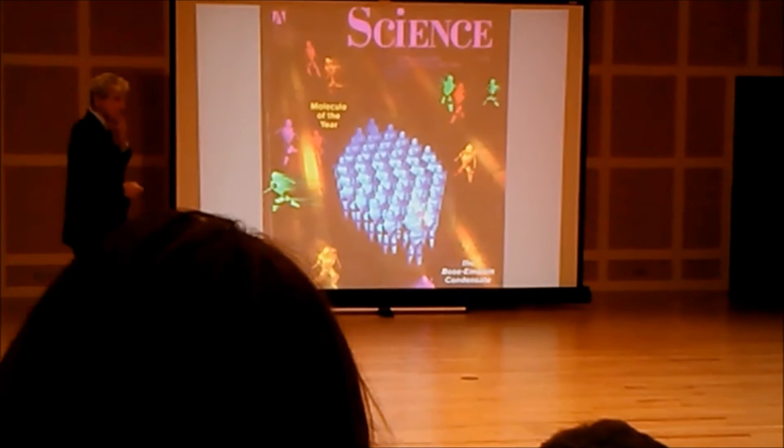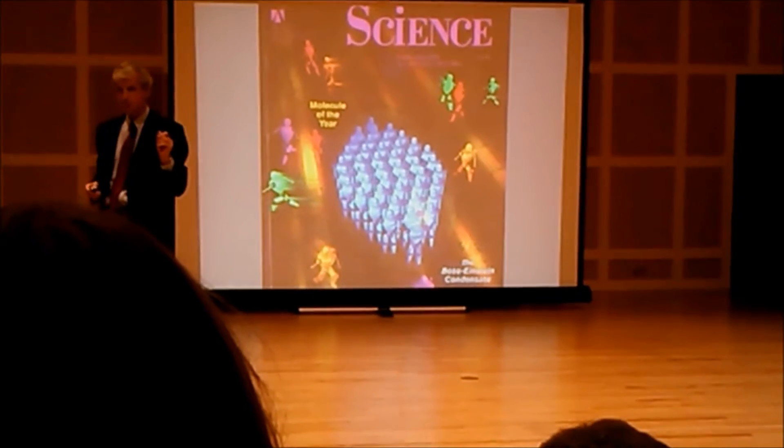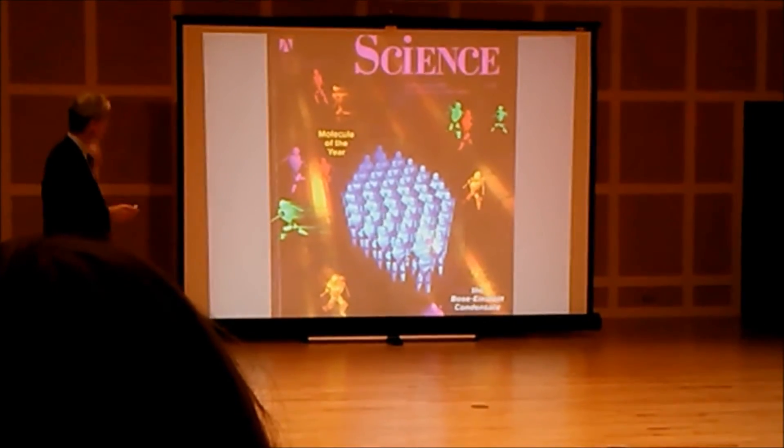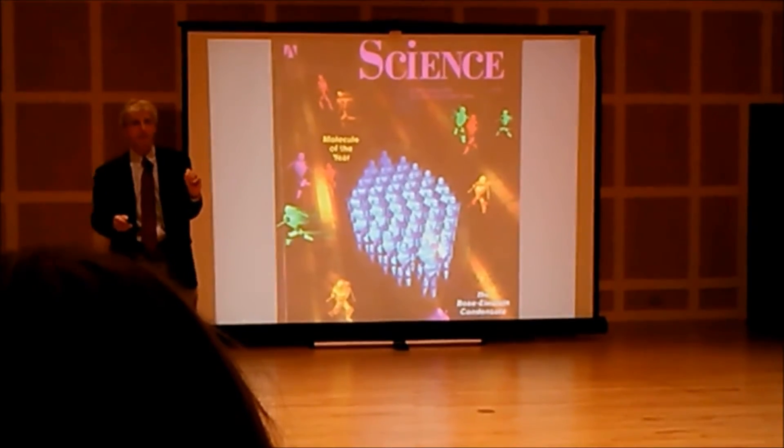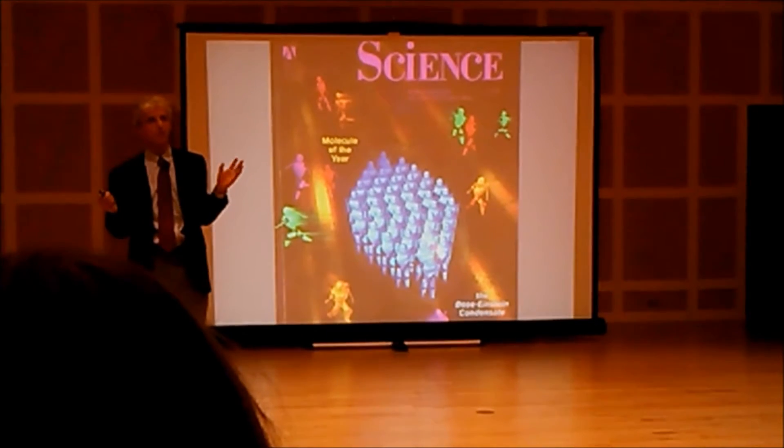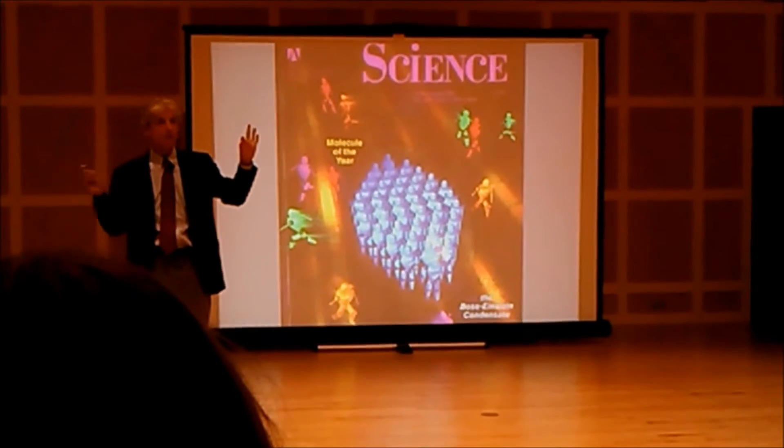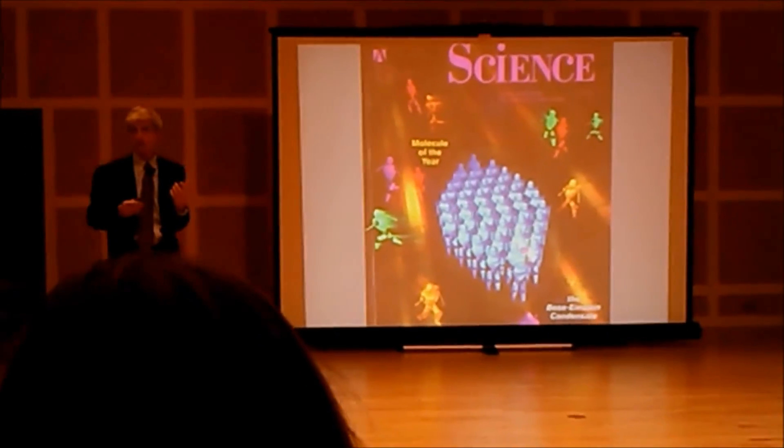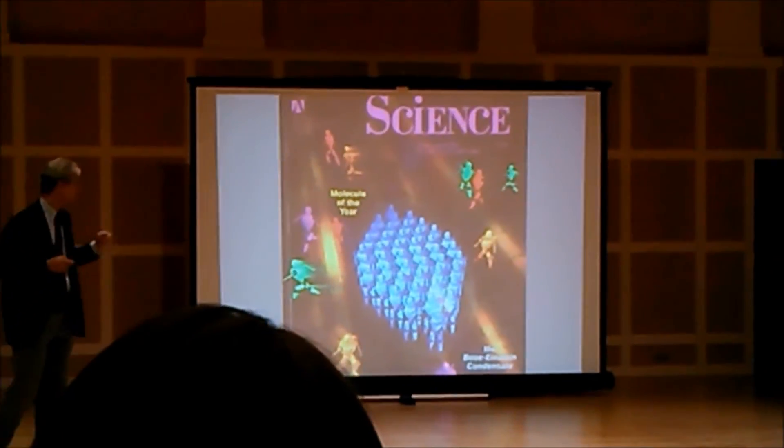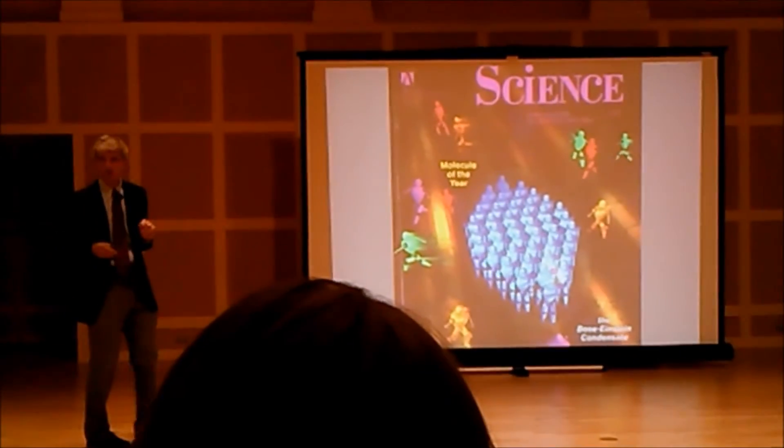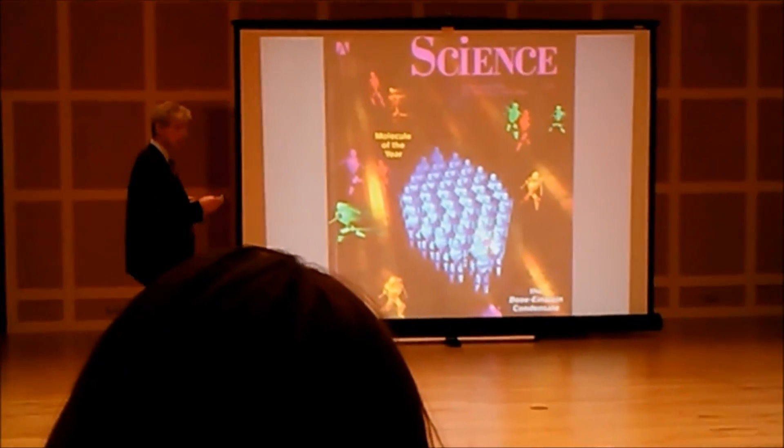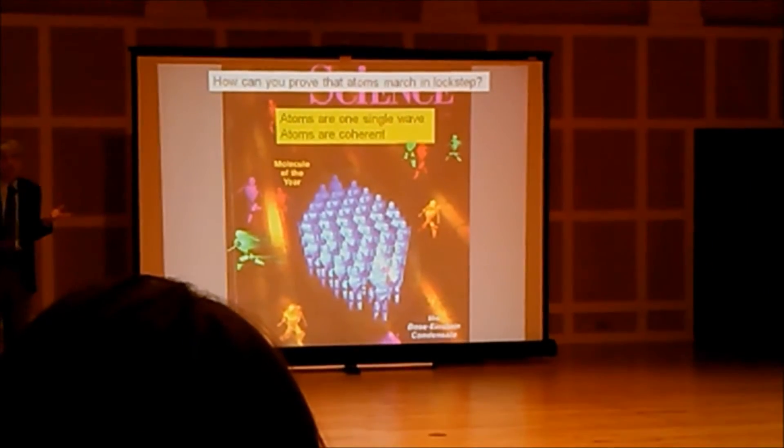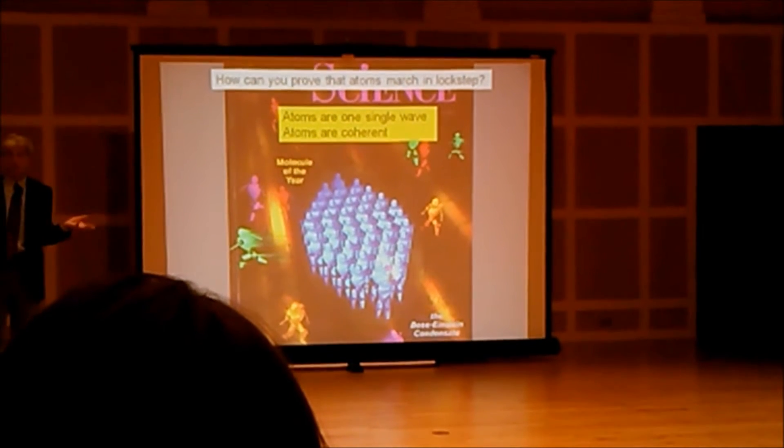Maybe some of you are disappointed. I said I show you the coldest form of matter, I show you particles which march in lockstep, but what I have shown to you are so far only black ellipses. Well, this was how we discovered it. But then we said, the next experiment should show, we truly want to show that atoms march in lockstep. So how do you show that atoms march in lockstep? You want to show that they are coherent, that they form a single wave.